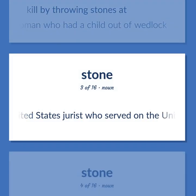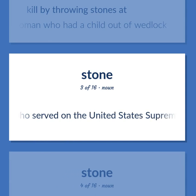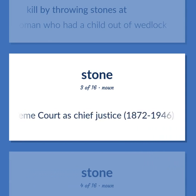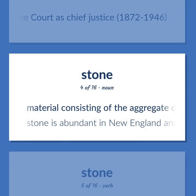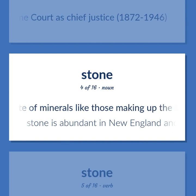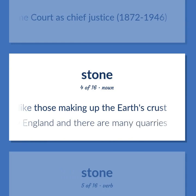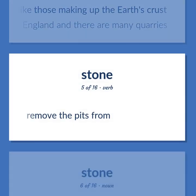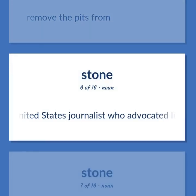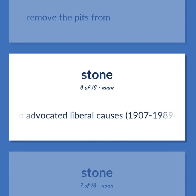United States Jurist who served on the United States Supreme Court as Chief Justice, 1872–1946. Material consisting of the aggregate of minerals like those making up the earth's crust — stone is abundant in New England and there are many quarries. Remove the pits from. United States Journalist who advocated liberal causes, 1907–1989.